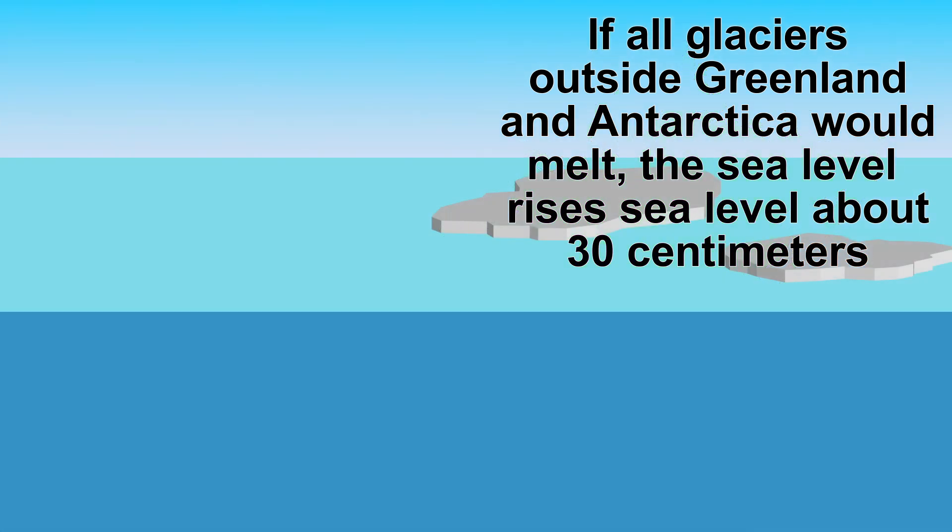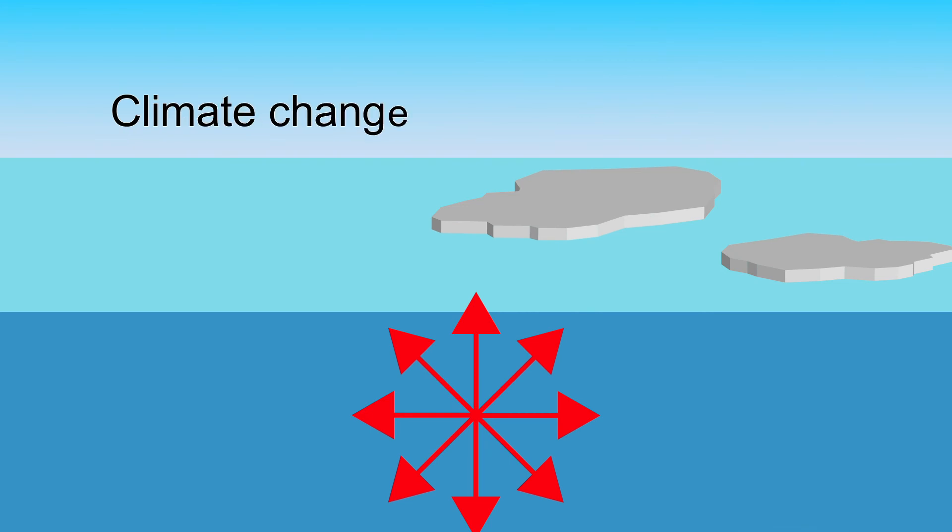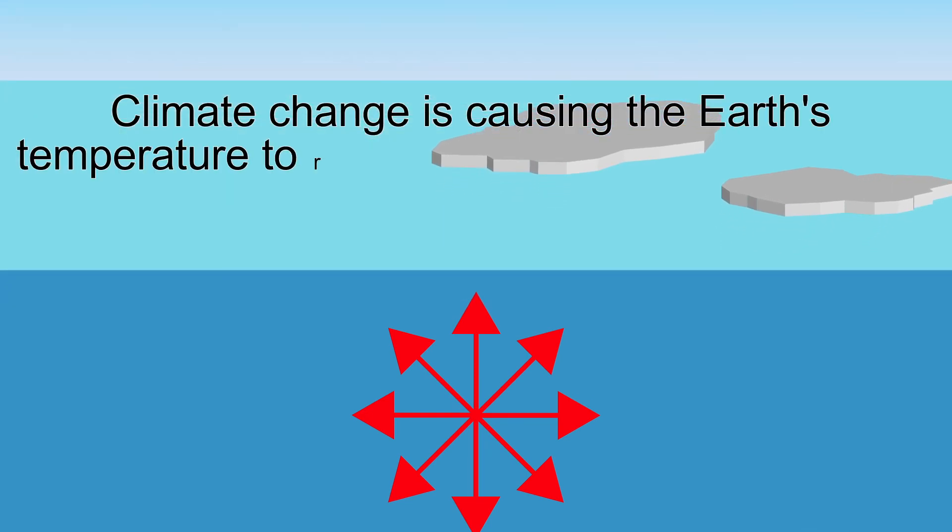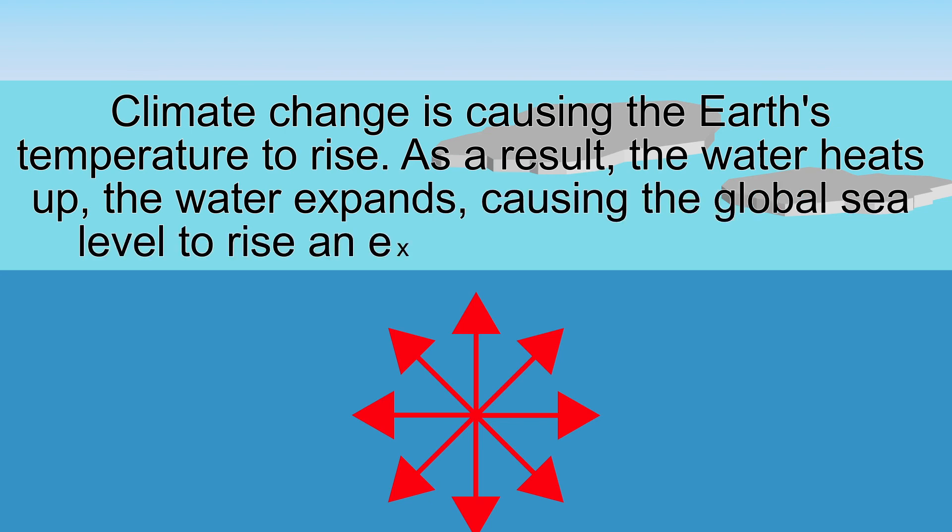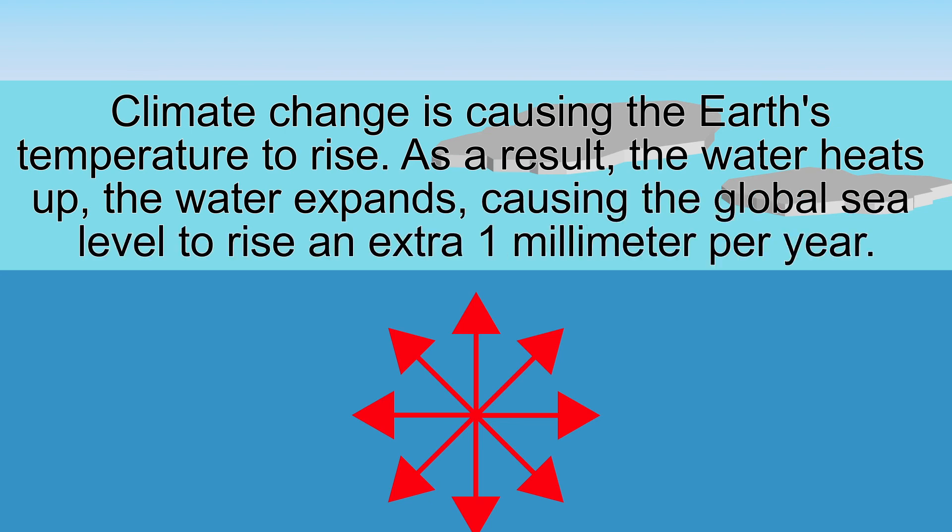Another reason that the sea level is rising is because the water expands. Climate change is causing the Earth's temperature to rise. As a result, the water heats up. The water expands, causing the global sea level to rise an extra millimeter per year.